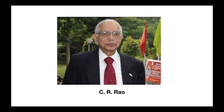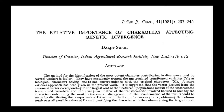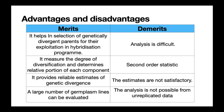In 1952, a researcher from Karnataka used the D-square method for assessing genetic diversity in breeding. This gave an idea about the relative importance of characters affecting divergence. The method helps in selecting genetically divergent parents for hybridization programs, measures the degree of diversification, determines the relative portion of each component, and provides reliable estimates of genetic divergence.